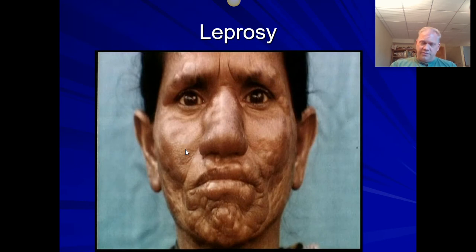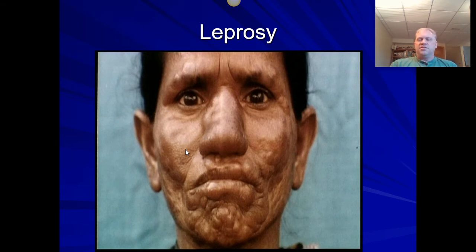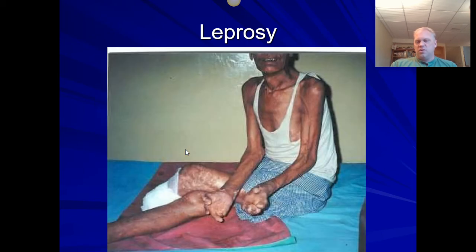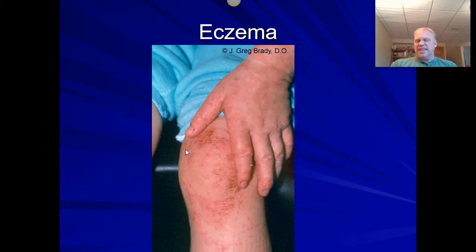Leprosy is a bacterial infection. It's transmitted through bacteria in groundwater. You hear about it even in biblical times — the leper colonies. It was simply a bacterial infection in the water. If they could have used antibiotics back then, we'd have avoided some of the other characteristics of leprosy. Antibiotics are how it is treated, but what it does is affect the soft tissues and circulation, resulting in some unsightly effects.